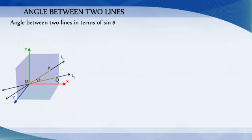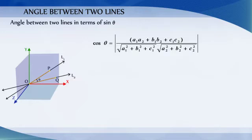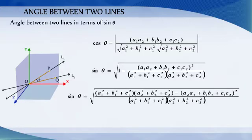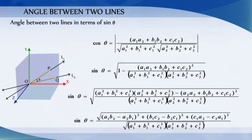Angle between two straight lines in terms of sin theta. We know sin theta equals root over (1 minus cos² theta). Substituting the value of cos theta, we get sin theta equal to root over [1 minus (A1·A2 + B1·B2 + C1·C2)² divided by (A1² + B1² + C1²)(A2² + B2² + C2²)]. On simplification, sin theta equals root over [(A1B2 minus A2B1)² + (B1C2 minus B2C1)² + (C1A2 minus C2A1)²] divided by root over (A1² + B1² + C1²) into root over (A2² + B2² + C2²).